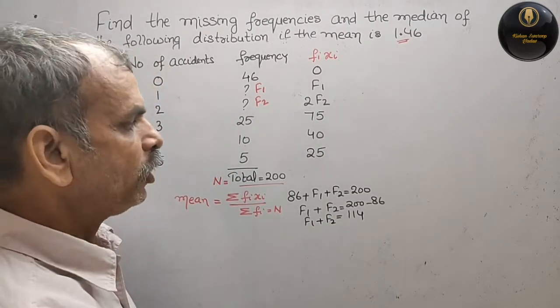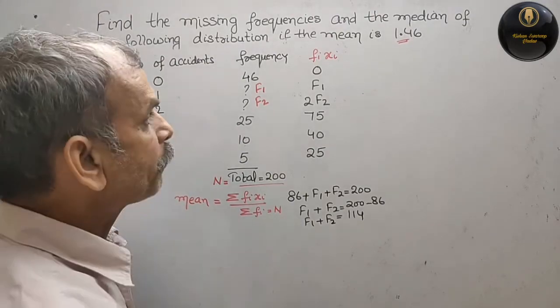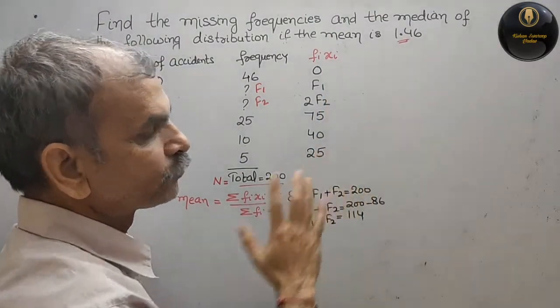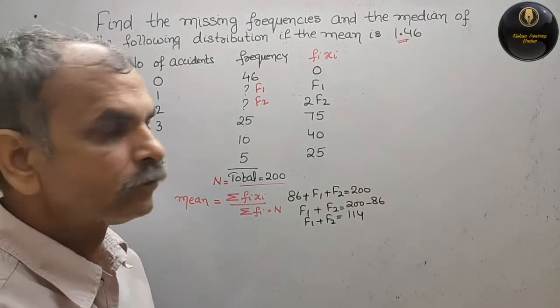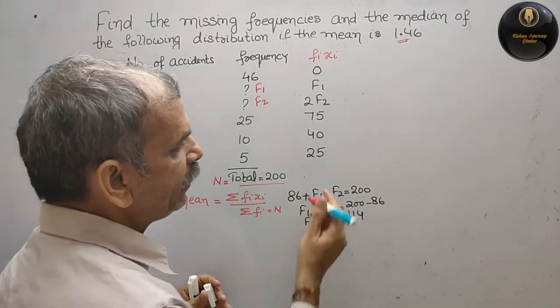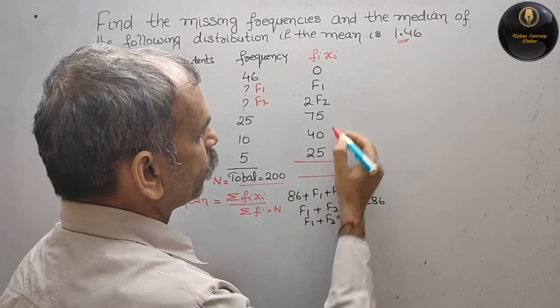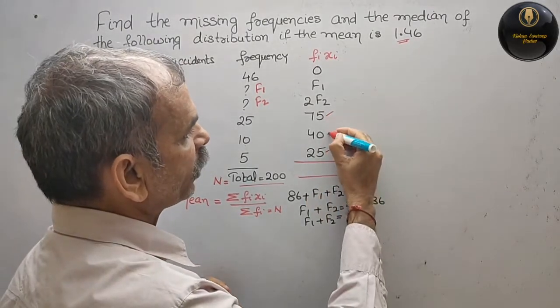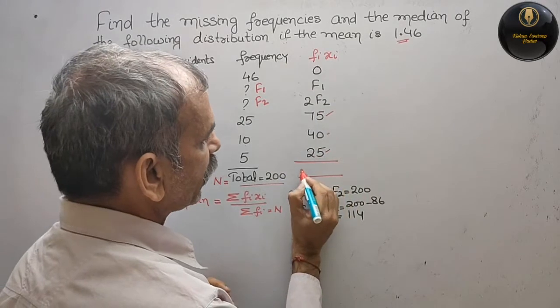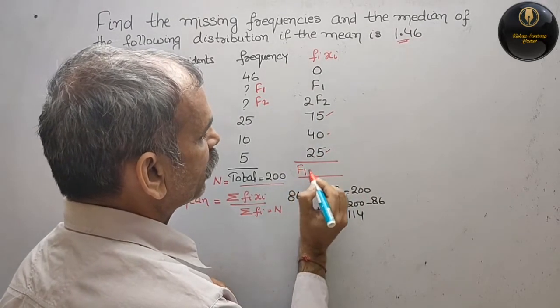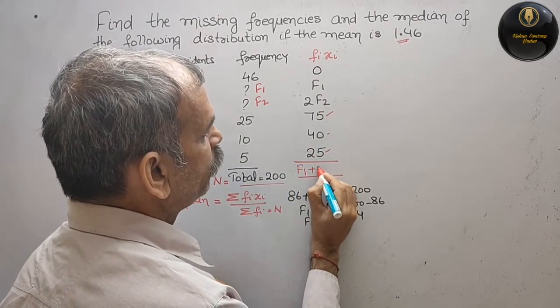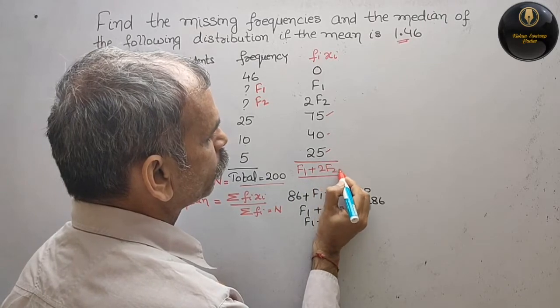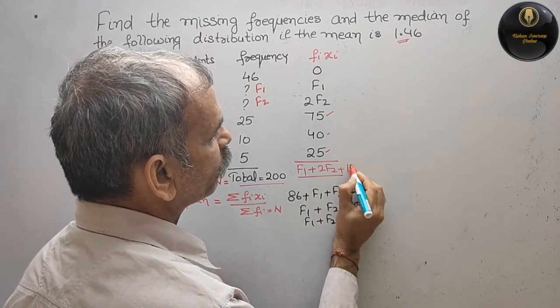Now again you can add this. So this is what, 75 plus 25 is 100, plus 40 is 140. So now we can say f1 plus 2f2 plus 140.